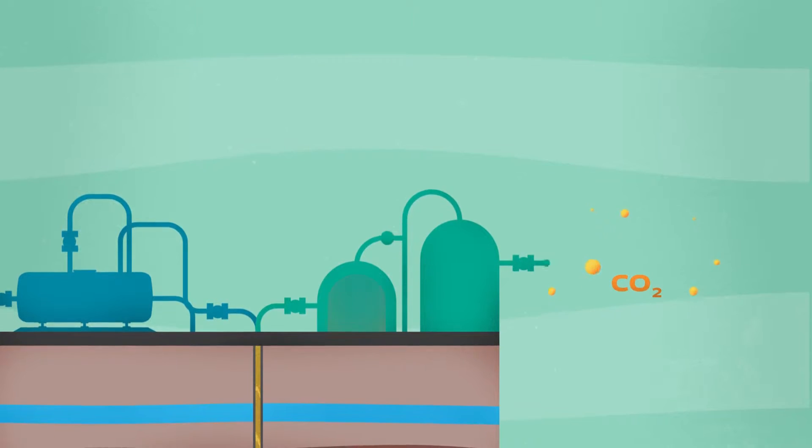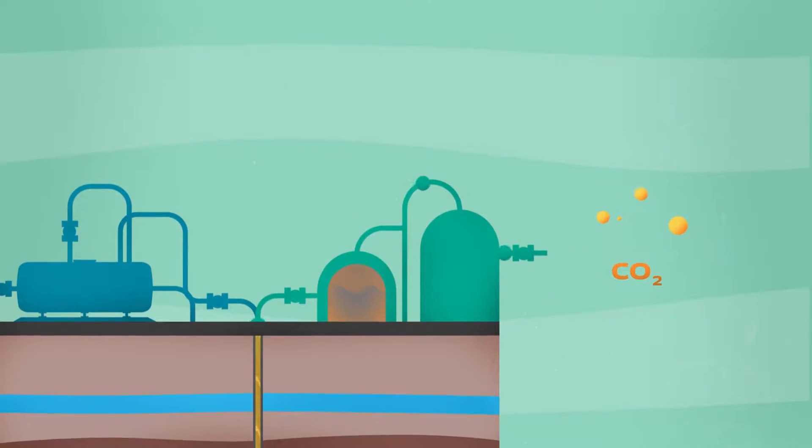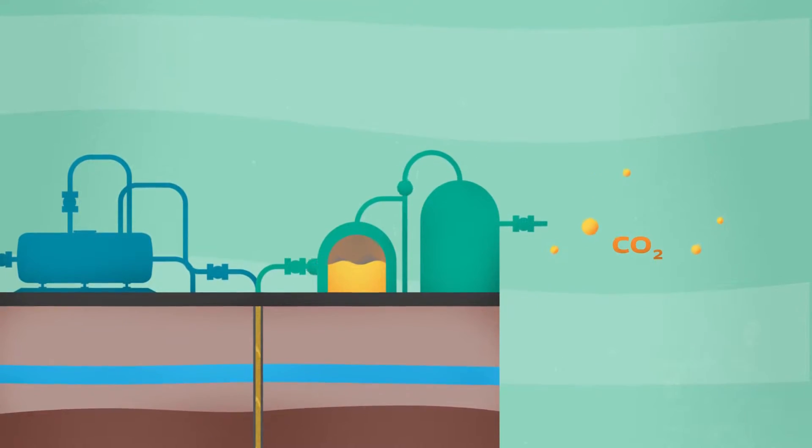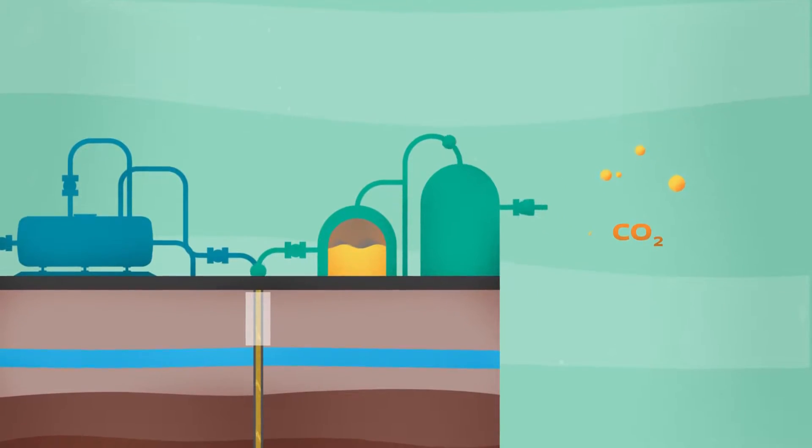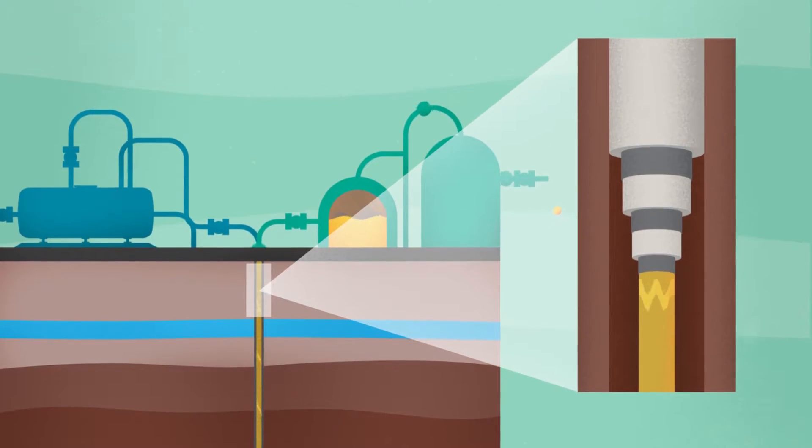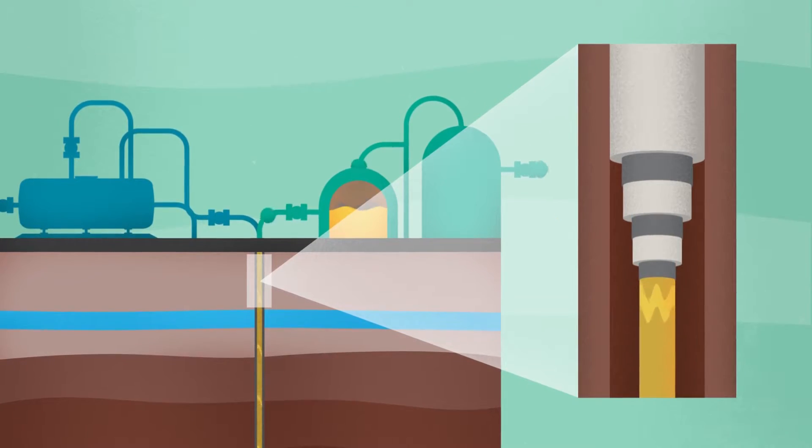It begins by condensing CO2 from gas into liquid, removing any water or corrosive elements so only CO2 gets injected. The injection well is engineered with multiple layers of steel and cement casing to ensure absolutely no leaks on the way down.